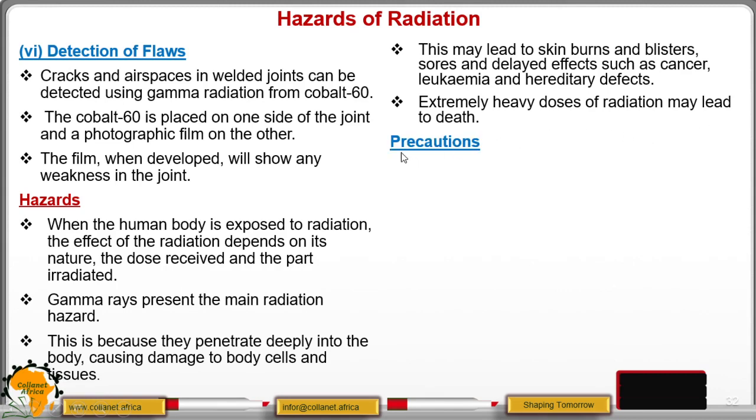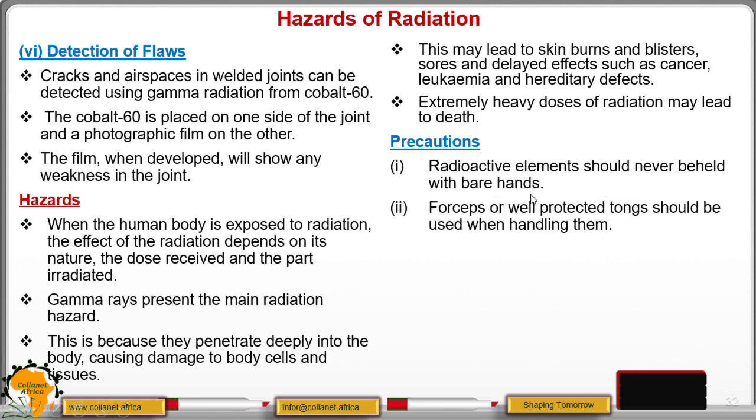How do we prevent this? We have precautions. When you are working in an industry that is handling radioactive elements, you should never hold them with bare hands. You are supposed to use forceps or well-protected tongs when you are handling them. Because when you handle the radioactive elements with your bare hands, they are going to penetrate into your flesh and they may kill your useful cells.